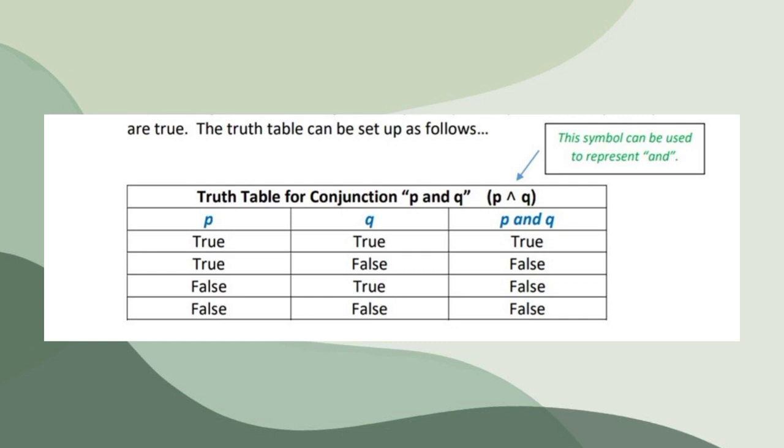So this is the truth table for conjunction P and Q. For P, we have true, true, false, false. For Q, we have true, false, true, false. For P and Q, we have true, false, false, false. The symbol you see over there is used to represent AND.